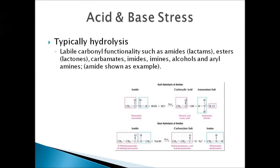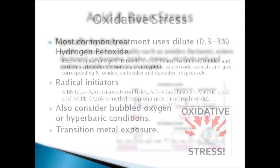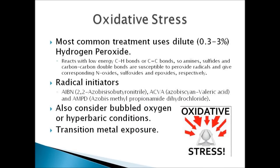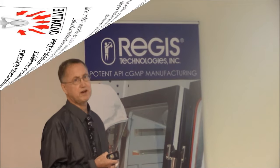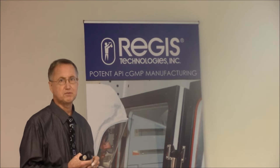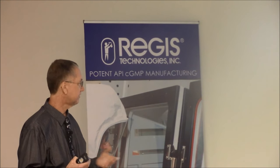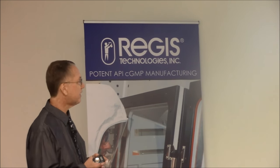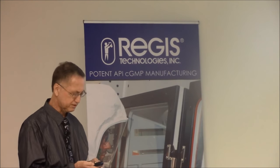Acid and base stress typically deal with hydrolysis mechanisms, with various labile bonds affected. For oxidative stress, hydrogen peroxide or other forms of oxidation can facilitate changes in your material. We typically work with hydrogen peroxide. I've always been interested in trying hyperbaric oxygen or bubbling oxygen through samples, but peroxide is really what the industry does at the moment.